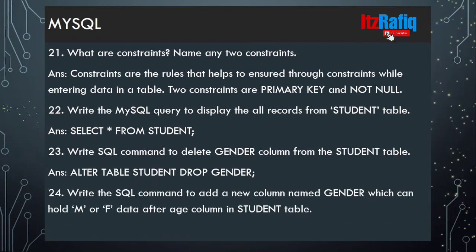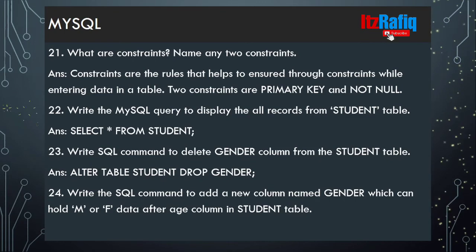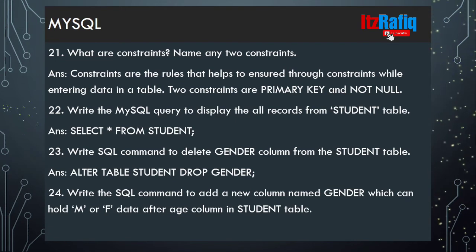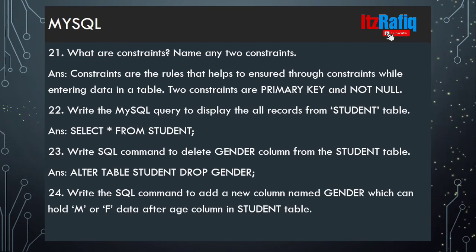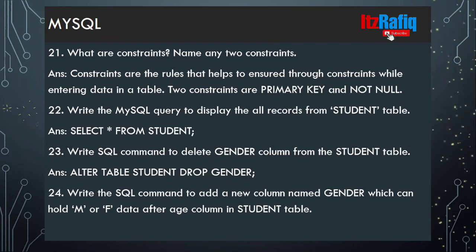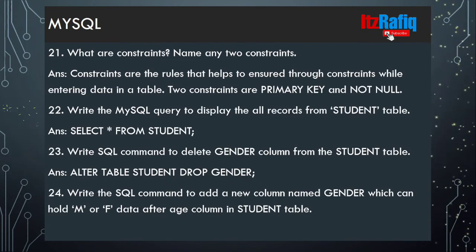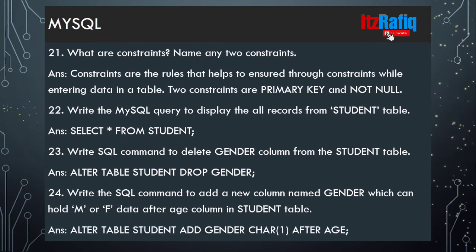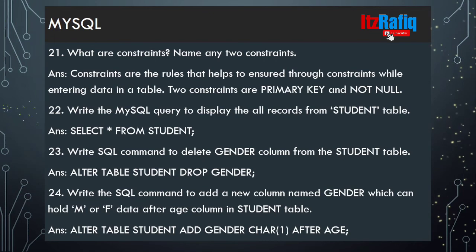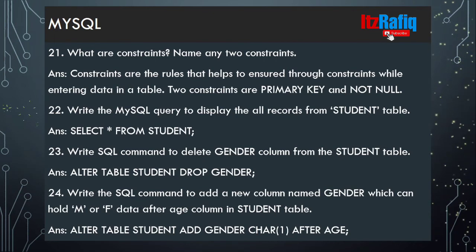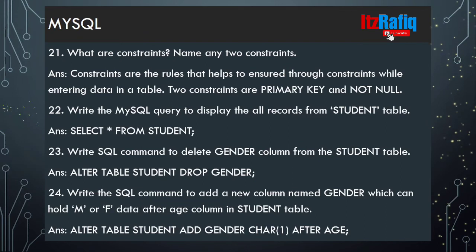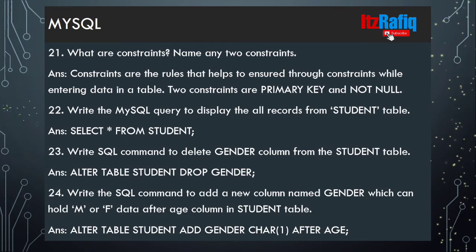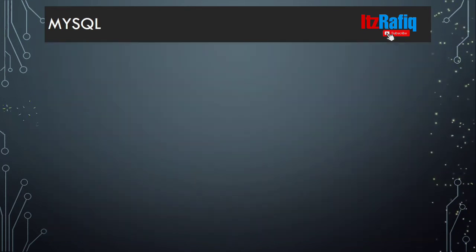Write the SQL command to add a new column gender which can hold M or F data after the age column in the student table. Since it holds only one character, we will write ALTER TABLE student ADD gender CHAR(1) AFTER age. If we do not write AFTER age, it will directly add to the last position.